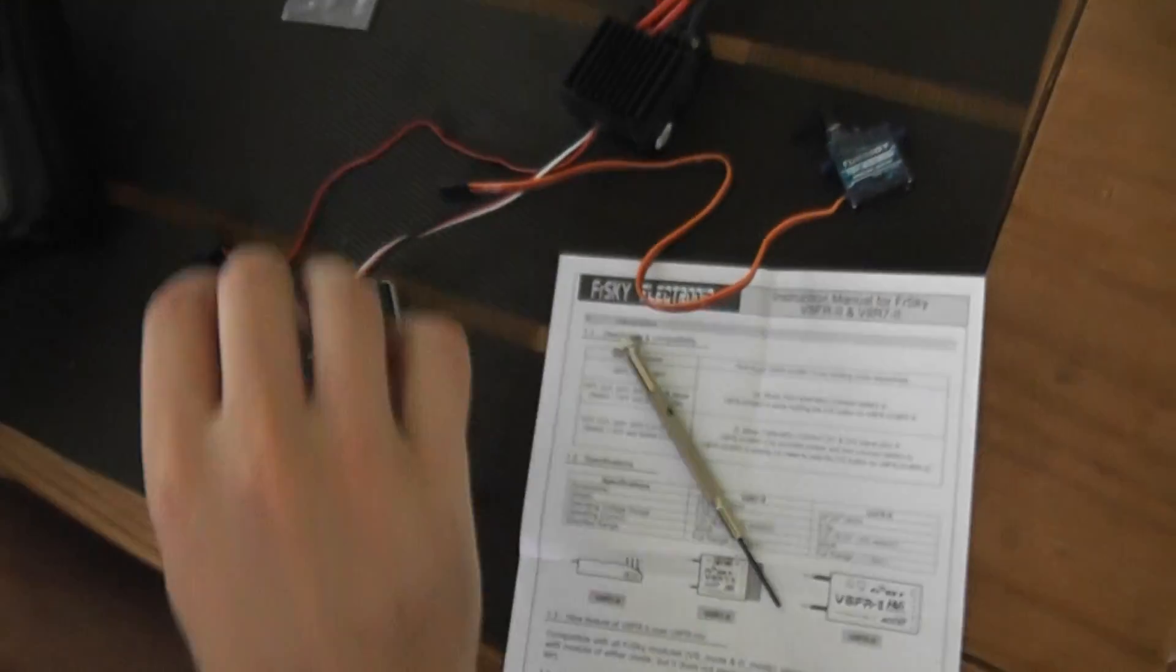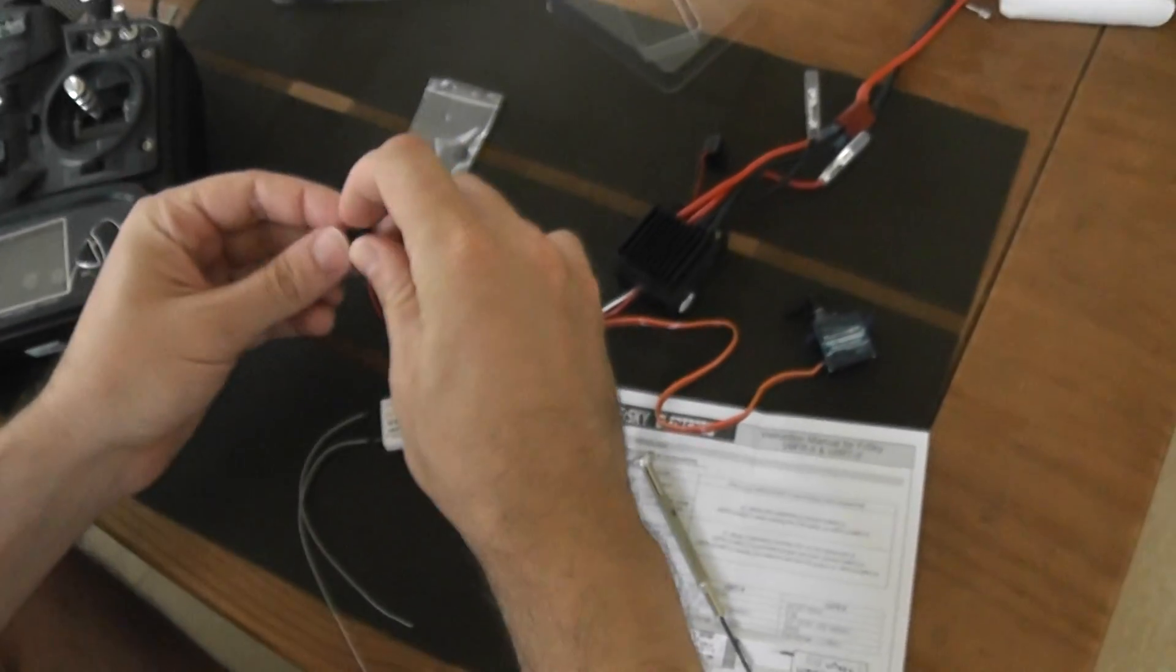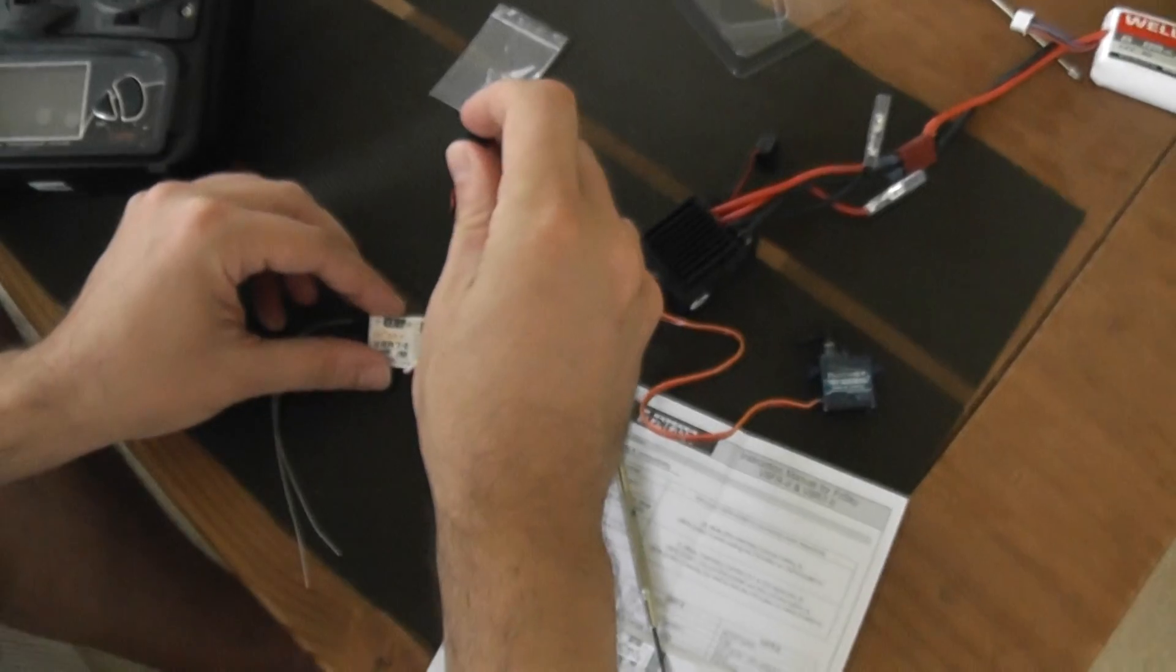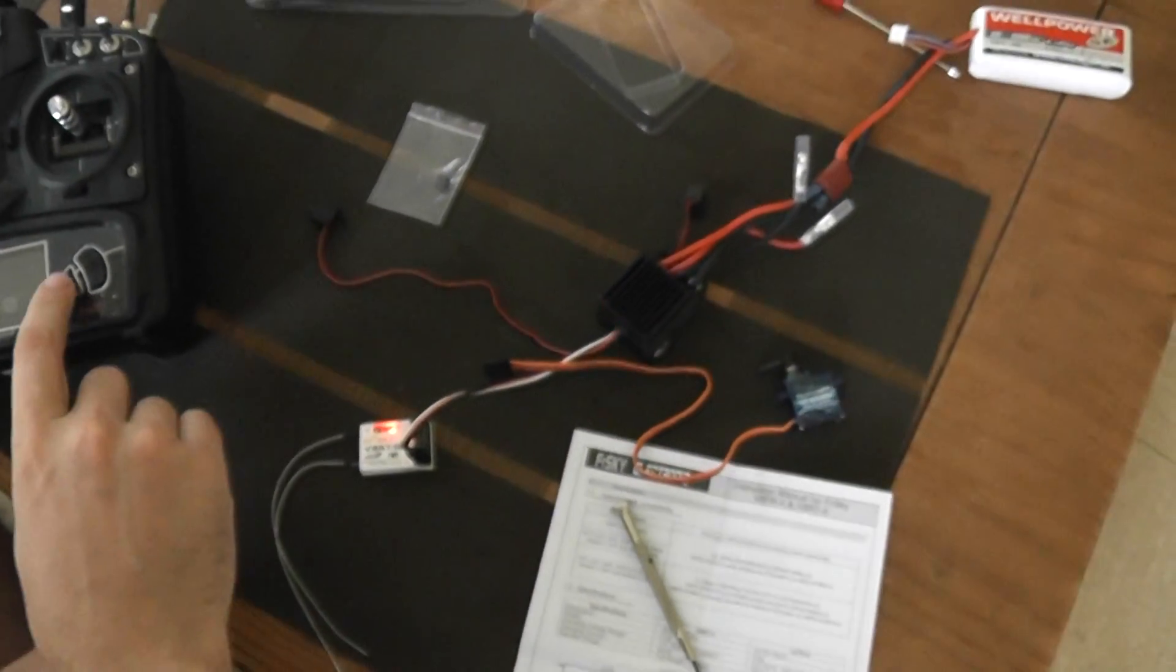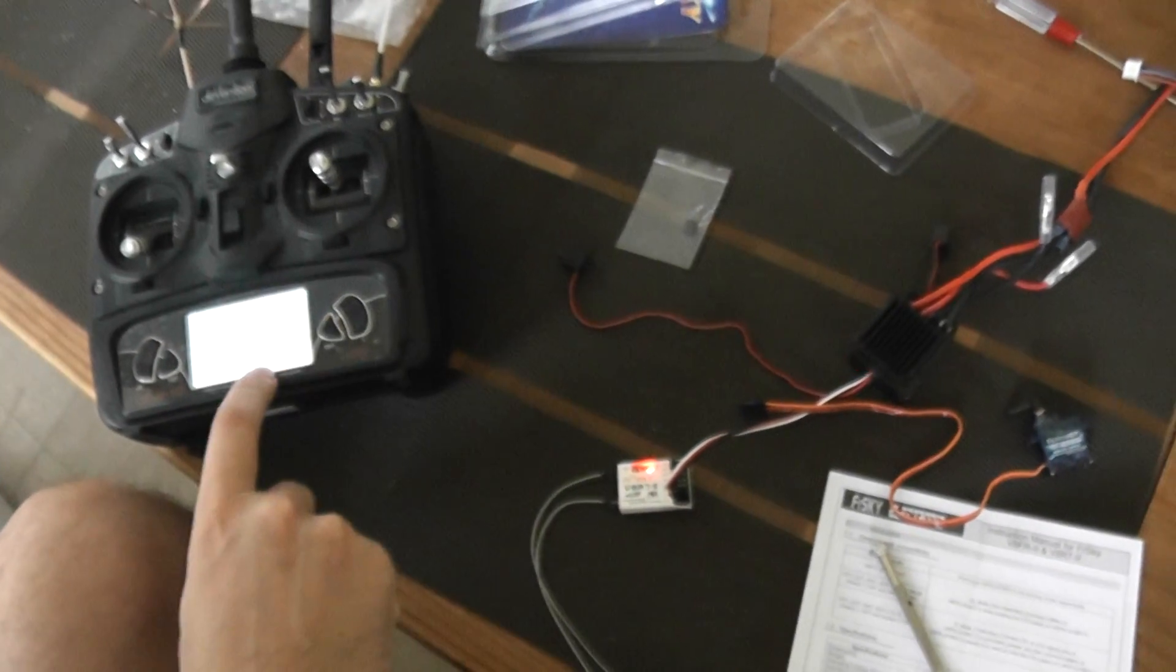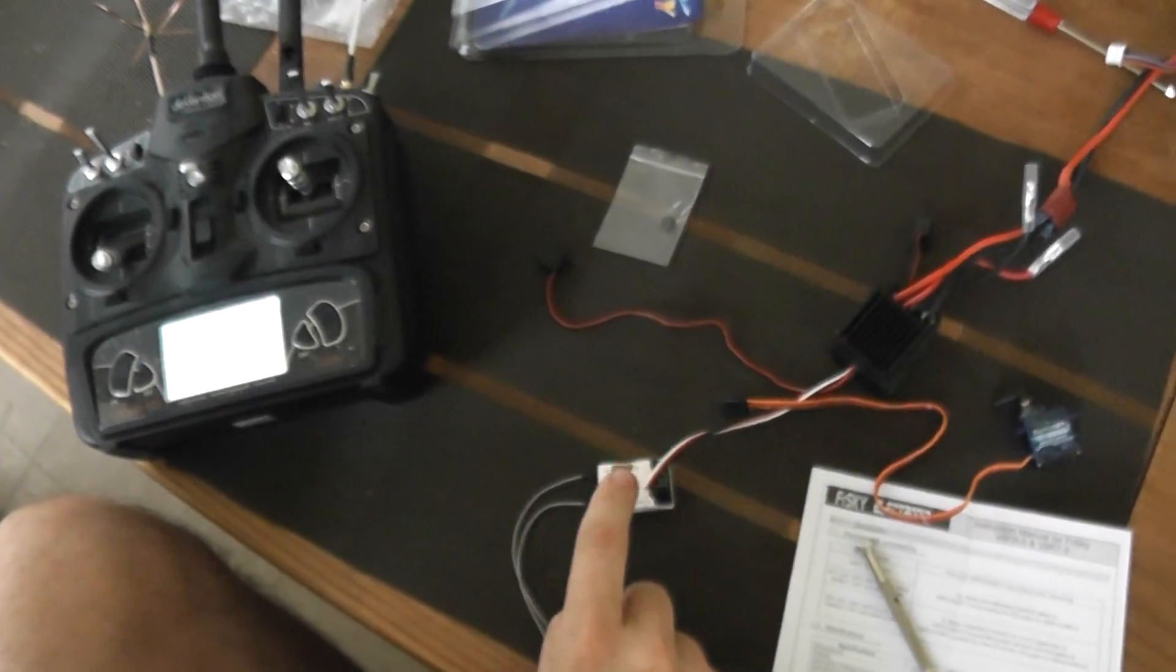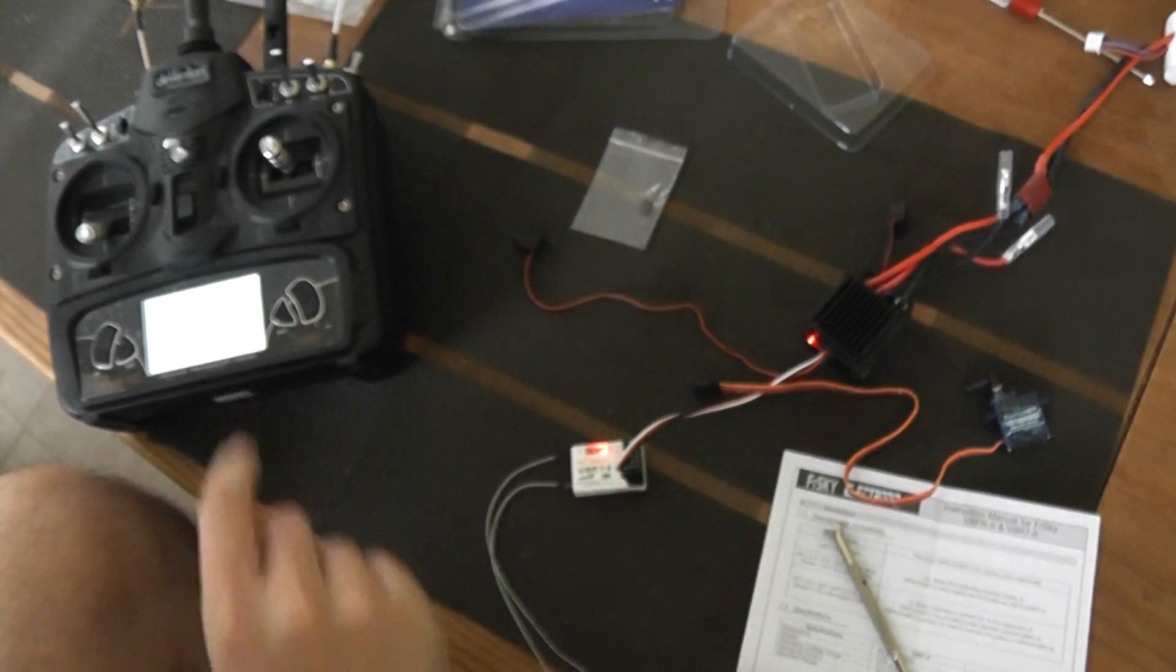So now I will redo the same operation. Start the ESC in order to turn on the receiver. And then make binding here on the Devo controller. And you see it's flashing. So it means that it's working.